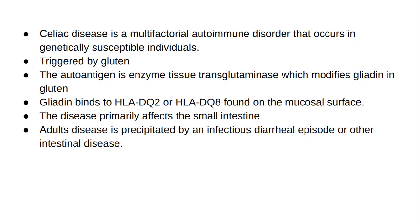Celiac disease is the most common genetically related food intolerance worldwide. It is a multifactorial autoimmune disorder that occurs in genetically susceptible individuals. Symptoms manifest when a genetically predisposed individual develops an immunological response to gliadin, which is found in gluten and related prolamins present in wheat, rye, and barley. With the consumption of food containing gluten, tissue transglutaminase is released and modifies gliadin from gluten proteins, which causes an immune reaction.